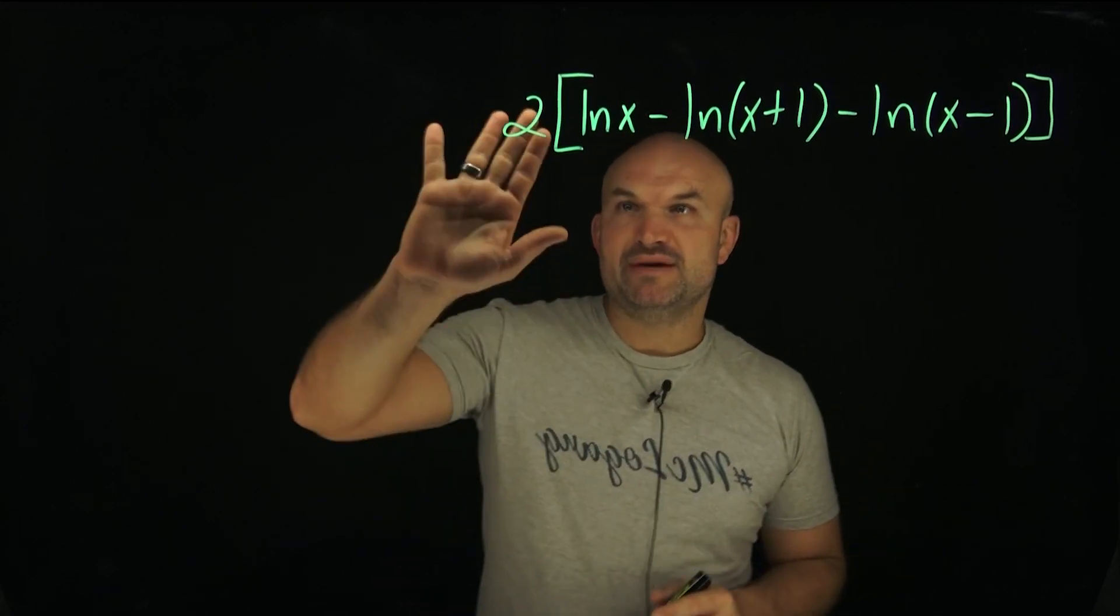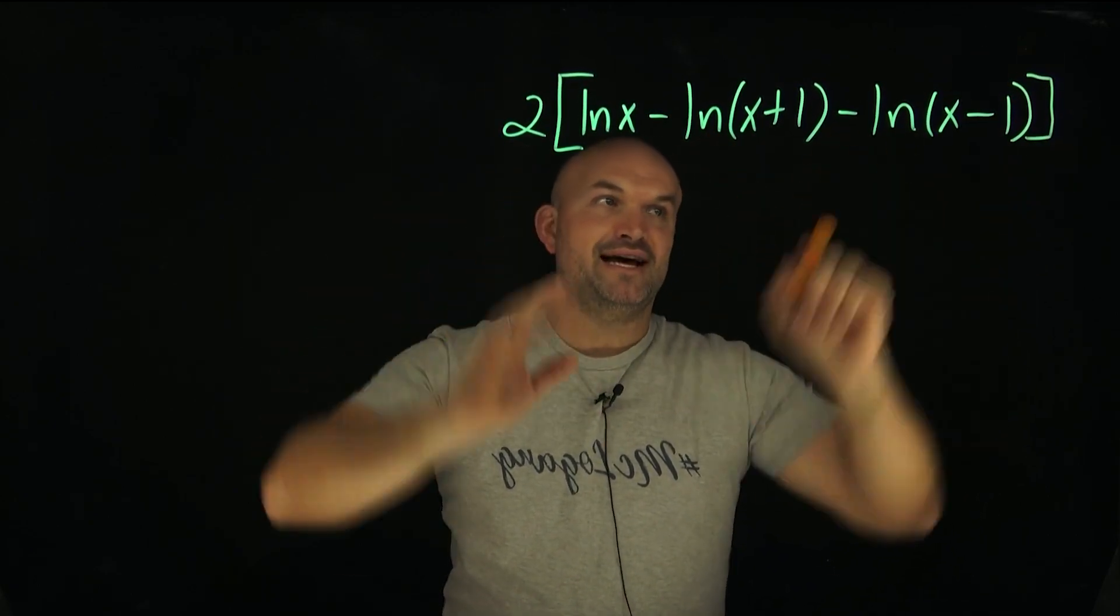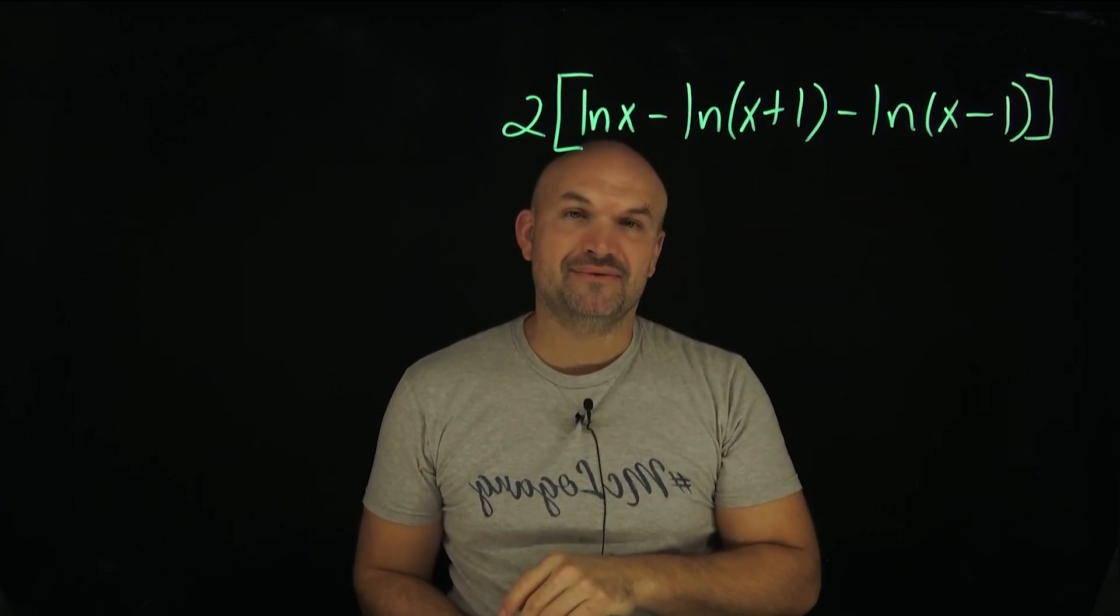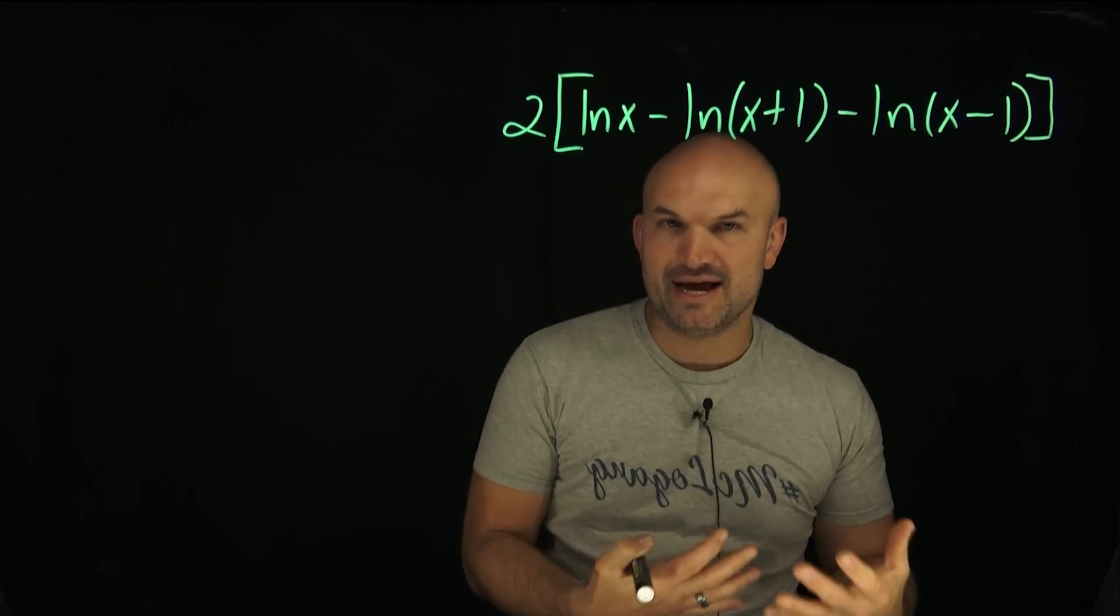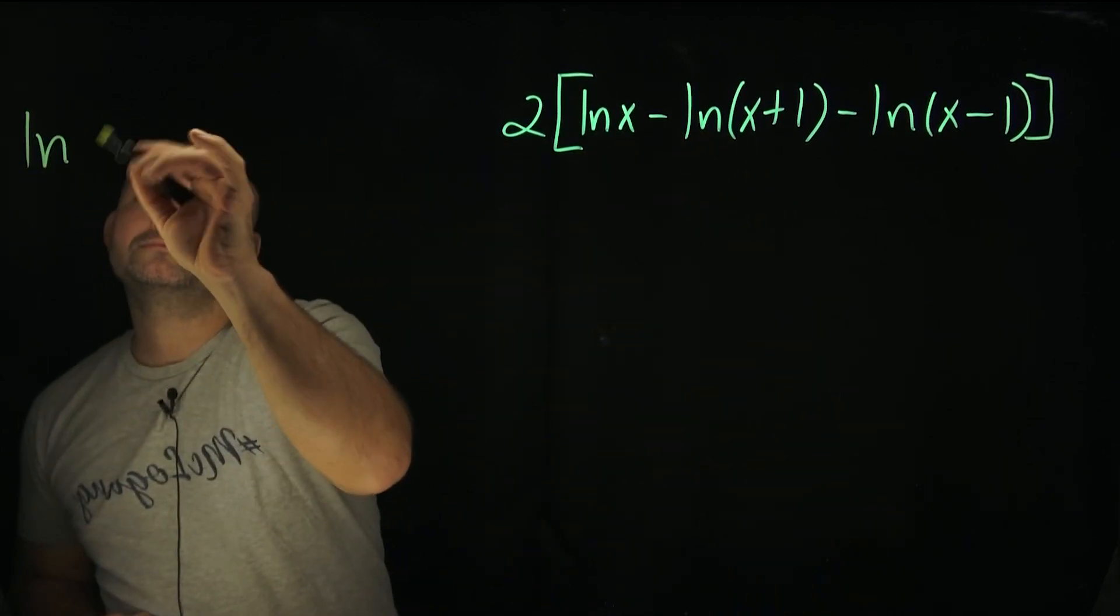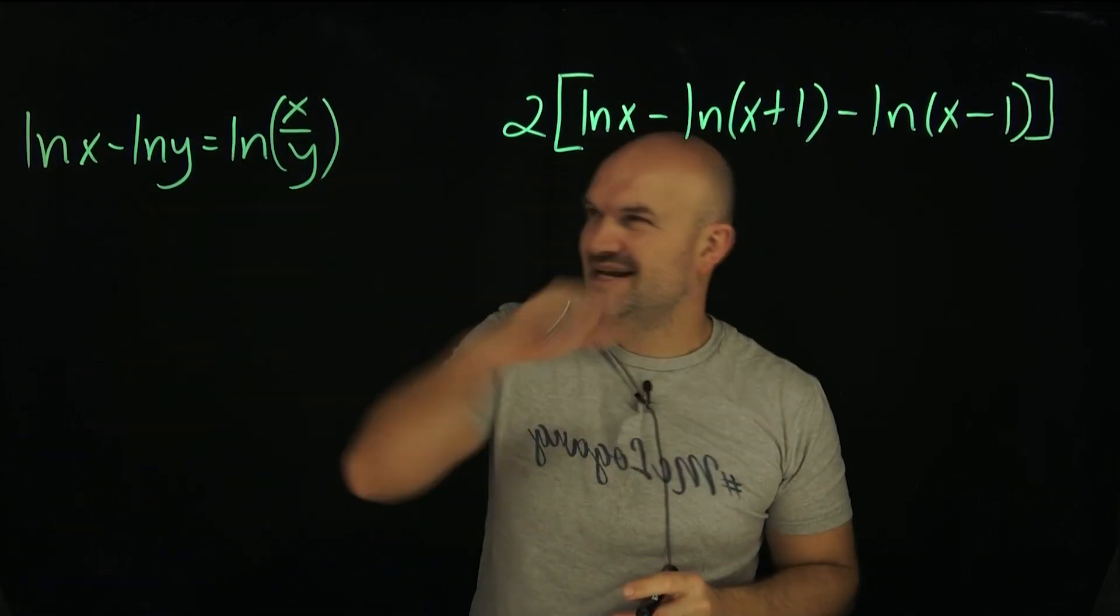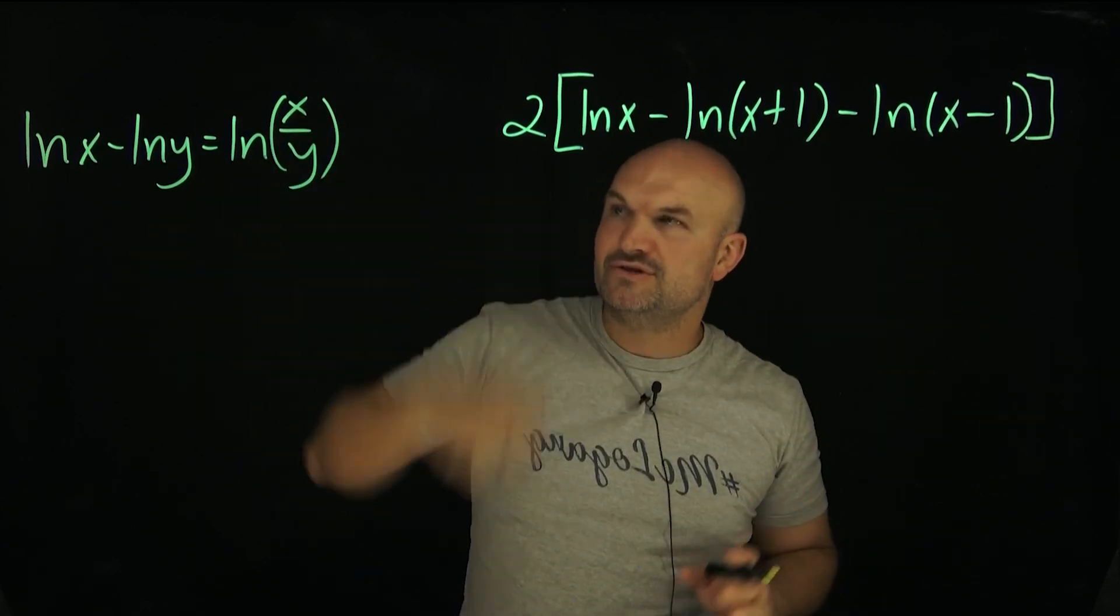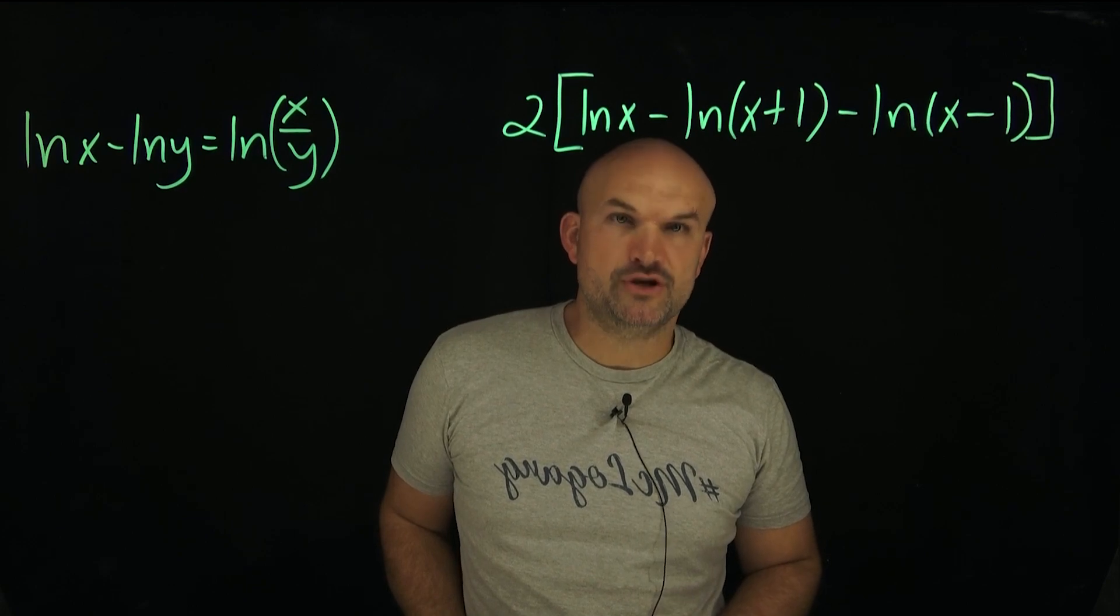So in this case, we have two times brackets here. We have ln of x minus ln of x plus 1 minus ln of x minus 1. So we have two subtractions. Now, what's confusing about this is a lot of students remember the quotient property and they can apply it rather easily. Most students don't get confused. They kind of get it memorized. If I have two logarithms separated by subtraction, that's going to be a quotient of their two arguments. But in this case, we have three of them. So what do we do?